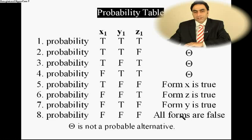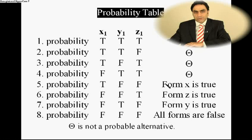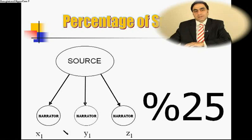So there are four valid alternatives out of eight. One of them says form X is true, one fourth says form Z is true, one fourth says form Y is true, and one fourth says all forms are false. The percentage of success for this narration is: for X1 — twenty-five percent, for Y1 — twenty-five percent, and for Z1 — also twenty-five percent.